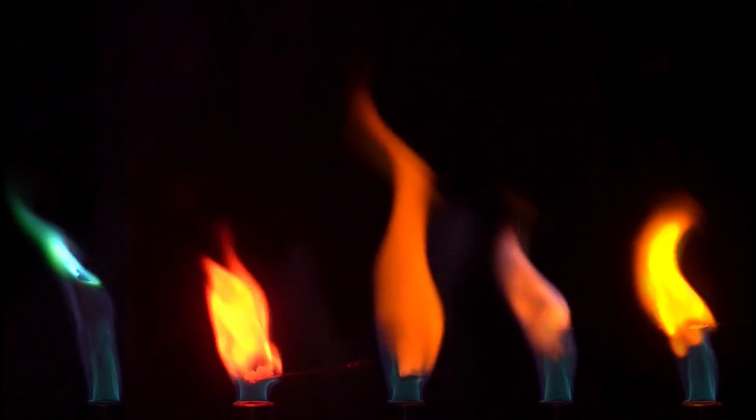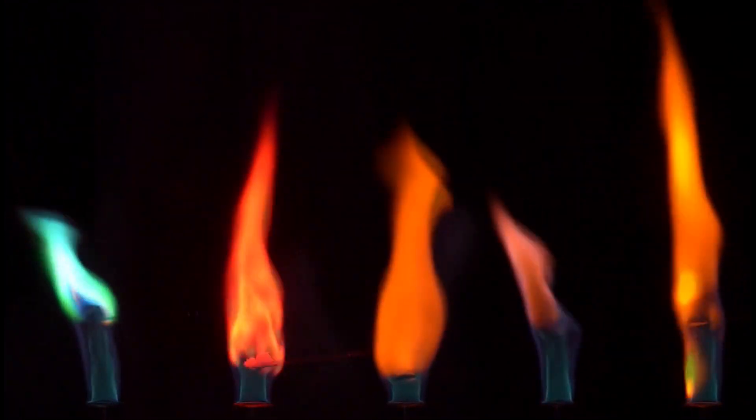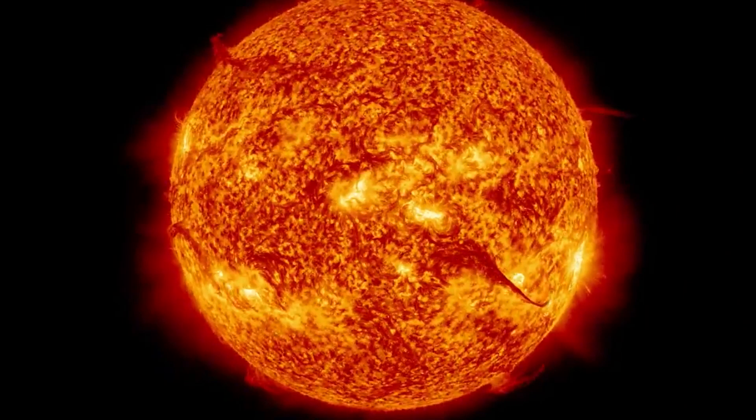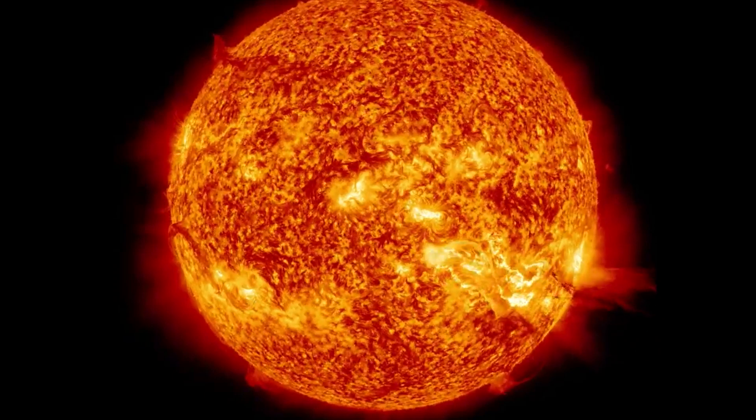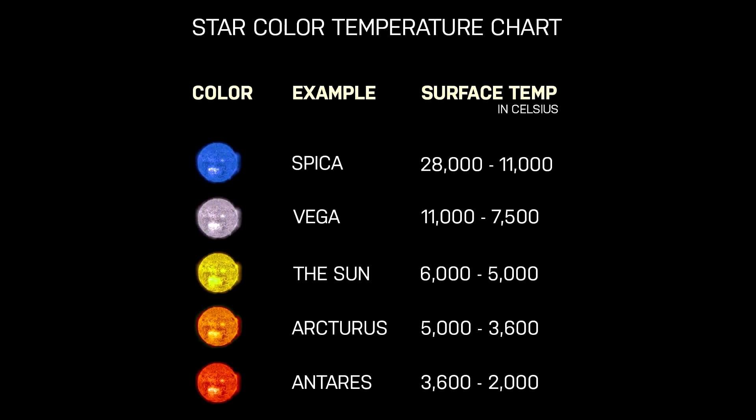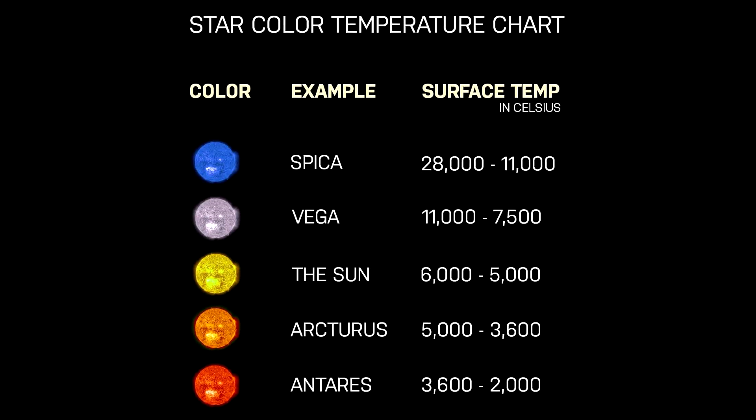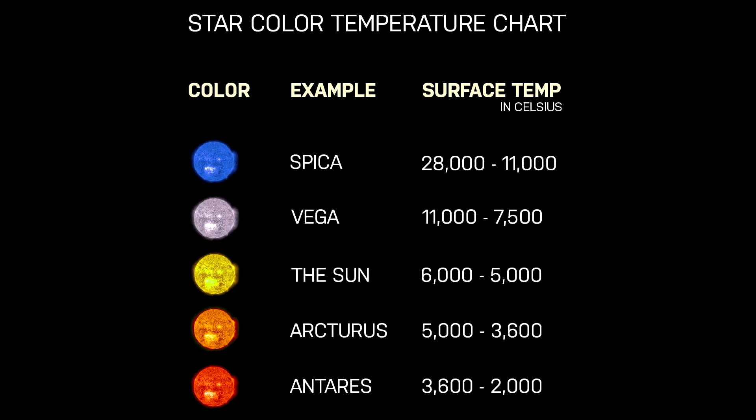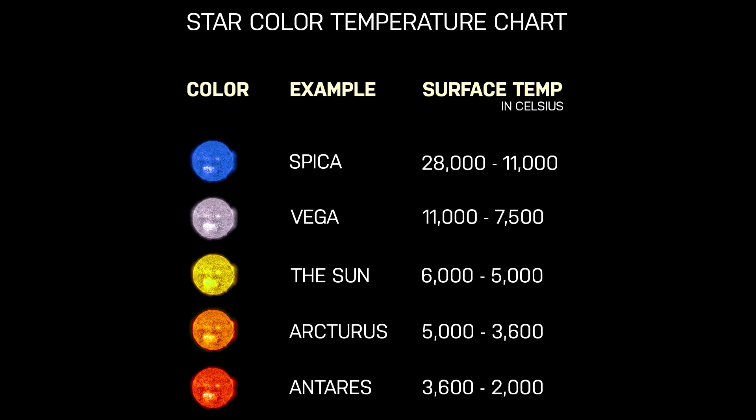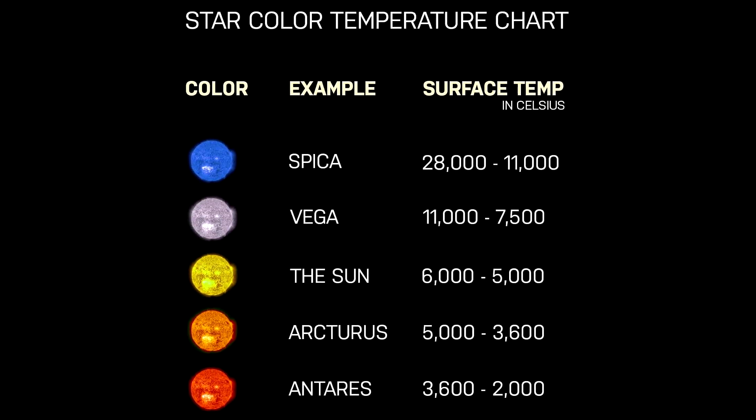In the same way, the color of stars tells us their temperature. Our sun emits more yellow light than any other because its surface temperature is 5,500 degrees. If the sun's surface were colder, say 3,000 degrees, it would look reddish, like the star Betelgeuse.